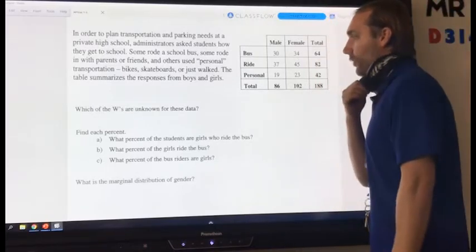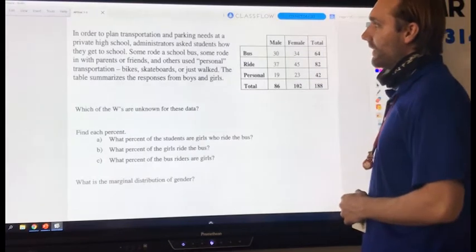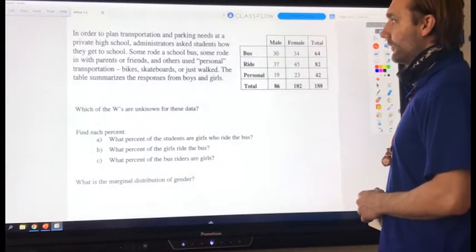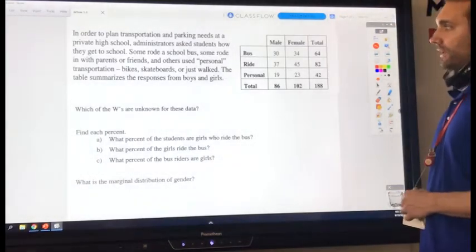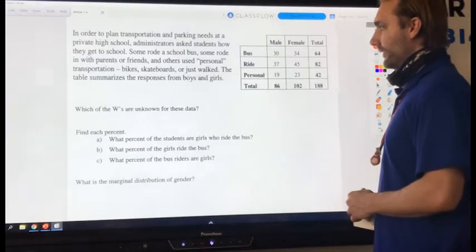Looking at yesterday's warm-up. In order to plan transportation and parking needs at a private high school, administrators ask students how they can get to school. Some rode a school bus, some rode in with parents or friends, and others use personal transportation like bikes, skateboards, or just walked. This table summarizes the responses for boys and girls.